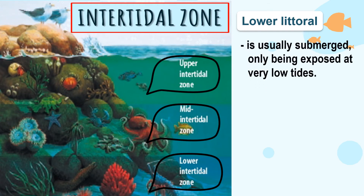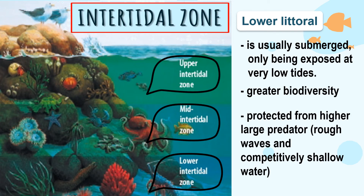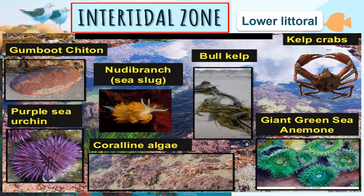The last sub-zone is the lower intertidal zone, also called the lower littoral. It is usually submerged, only being exposed during very low tide. There is great diversity in this zone since it is always covered with water, and it is protected from large predators due to rough waves and shallow water. Organisms in this zone include the gumboot chiton, sea slug, ball kelp, kelp crabs, purple sea urchin, coralline algae, and the giant green sea anemone.